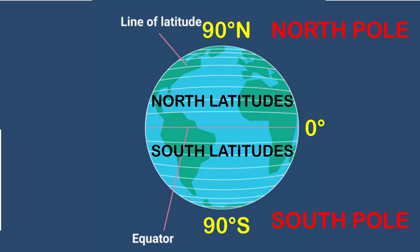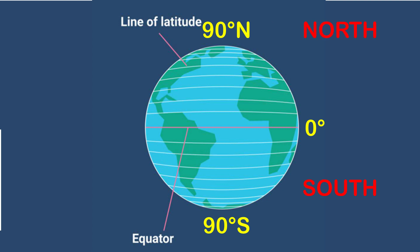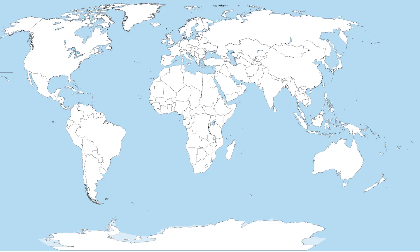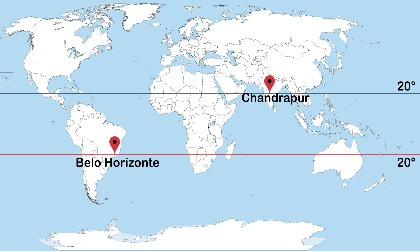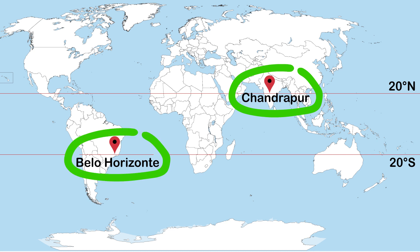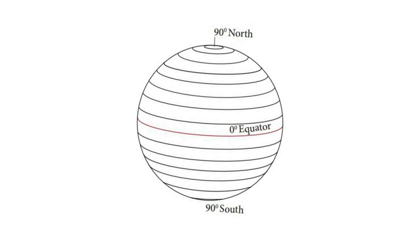The value of each latitude is followed by either the word north or south, generally indicated by the letter N or S. For example, both Chandrapur in Maharashtra, India, and Belo Horizonte in Brazil, South America, are located on parallels of about 20 degrees latitude. But the former is 20 degrees north of the equator and the latter is 20 degrees south of it. We therefore say that Chandrapur is situated at 20 degrees north latitude and Belo Horizonte is situated at 20 degrees south latitude.